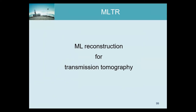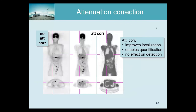There are two reasons to reconstruct the transmission scan. One is that if you reconstruct and then forward project, you get less noise in your transmission data. Another reason is that it gives very poor but at least some anatomical information — for example, you can see whether a tumor is at the edge of the liver, helping determine if it's a lung tumor close to the liver or a liver tumor close to the lung.